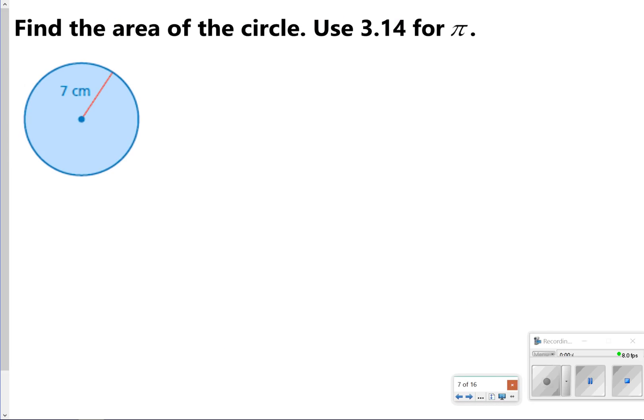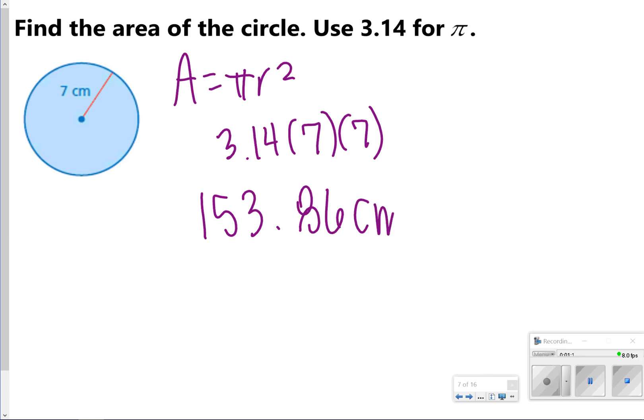So the first one, we're going to find area of the circle, and we're going to use 3.14 for pi. Essentially, you're just taking your formula, pi times radius squared, and filling it in. 3.14 times 7 times 7, since 7 is the radius. Once I type that into my calculator, I'm going to get 153.86 centimeters squared.